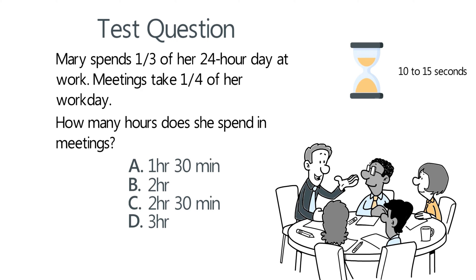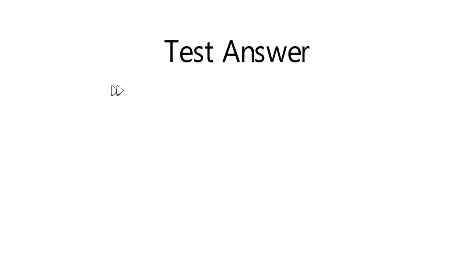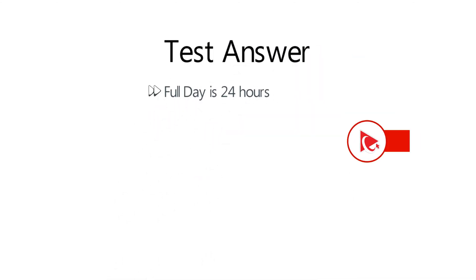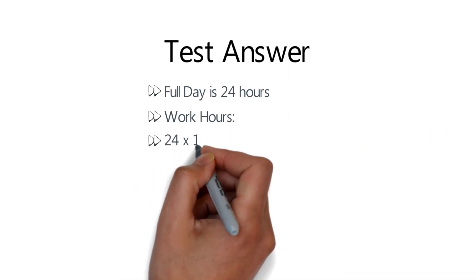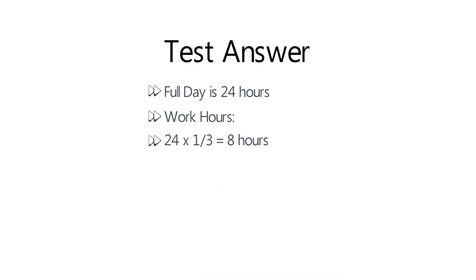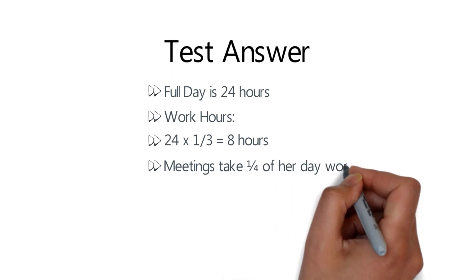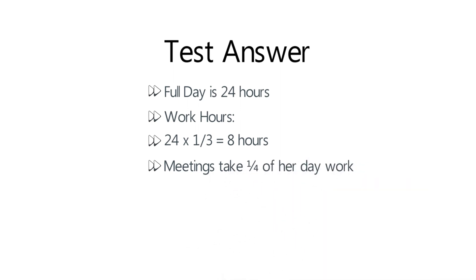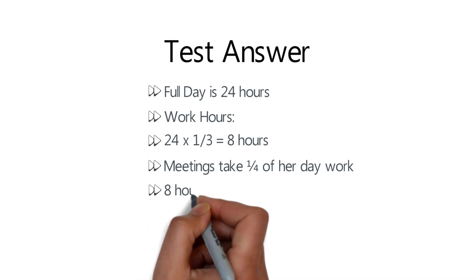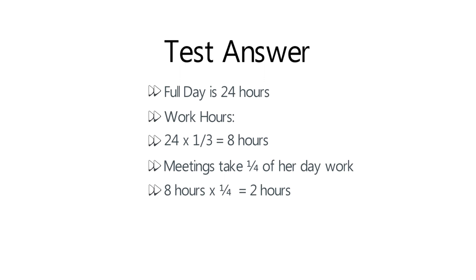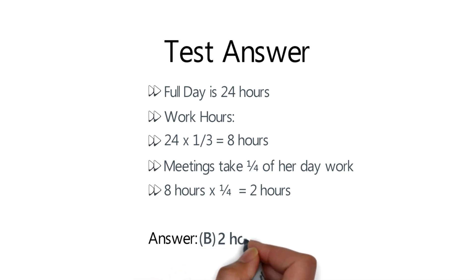A full day has 24 hours. Mary's working hours represent one-third of the full day, which is eight hours — calculated by dividing 24 by 3. Meetings take one-fourth of her workday, so to calculate how much time she spends in meetings we multiply eight hours by one-fourth. The result is two hours. The correct answer is choice B: two hours.